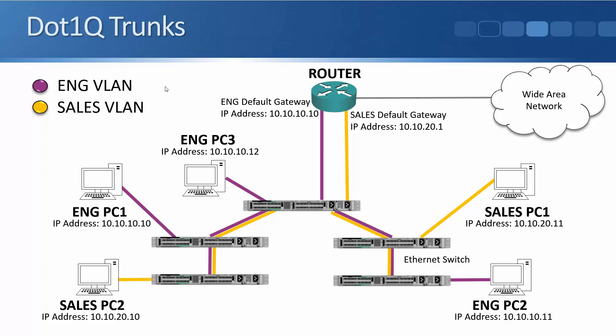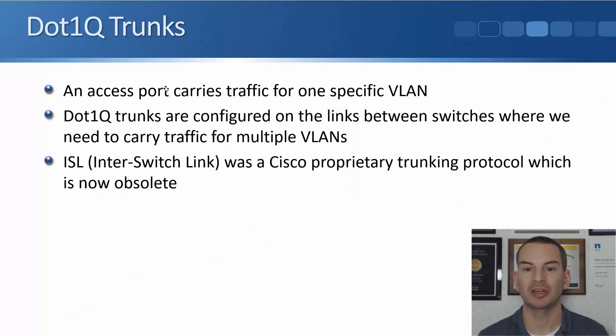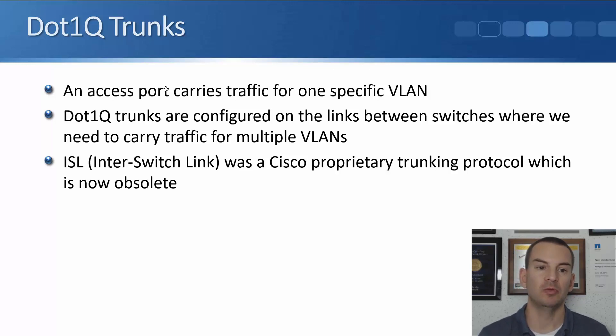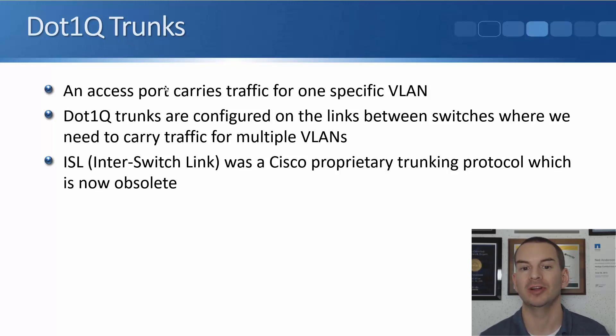The protocol used for trunking is .1q. On the links between switches, rather than configuring them as an access port, which can only carry traffic for one VLAN, we configure them as a trunk port, which will carry traffic for all of our VLANs. So an access port carries traffic for one specific VLAN, while .1q trunks are configured on the links between switches where we need to carry traffic for multiple VLANs. One of the older protocols available for this was ISL, inter-switch link — a Cisco proprietary trunking protocol which is now obsolete. The industry has standardized on using .1q.